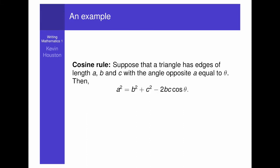Let's see an example. The cosine rule. Suppose that a triangle has edges of length a, b and c with the angle opposite a equal to theta. Then, a squared equals b squared plus c squared minus 2bc cosine theta. Students were asked to provide a proof of this for when theta is an obtuse angle.